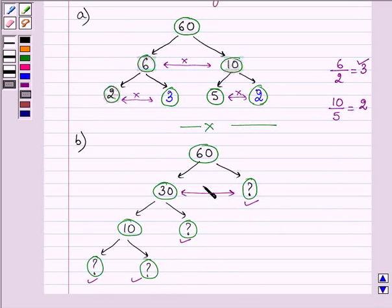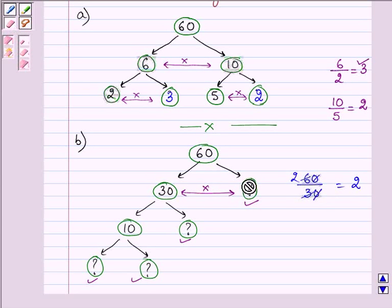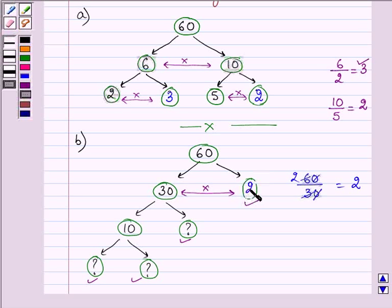Now 30 should get multiplied with which number so that their product becomes equal to 60? So we will divide 60 by 30 to get our answer, and that comes out to be 2. So the answer to this question mark is 2.